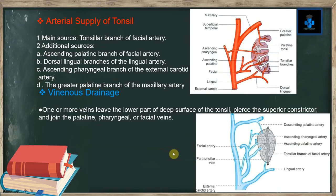Arterial supply of the tonsil: The main source is the tonsillar branch of the facial artery. Additional sources include the ascending palatine branch of the facial artery, and the dorsal lingual branches of the lingual artery, which arises from the external carotid artery.